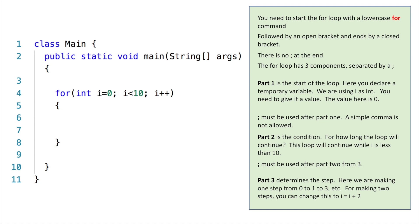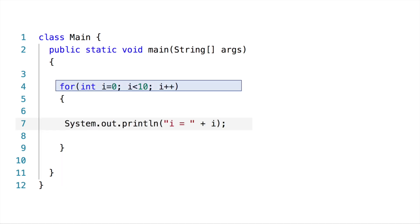Now we know the structure of our for loop: the 'for' keyword, open bracket, initial value, semicolon, condition, semicolon, and how we're going to increment — by one is just 'i++', or 'j++' if using j. Let's look at an example and see how it runs. Here is a simple example. We have a for loop starting at zero, running while i is less than 10 — meaning 10 is not included. If 10 needs to be included you can write 'i less than or equal to 10'.